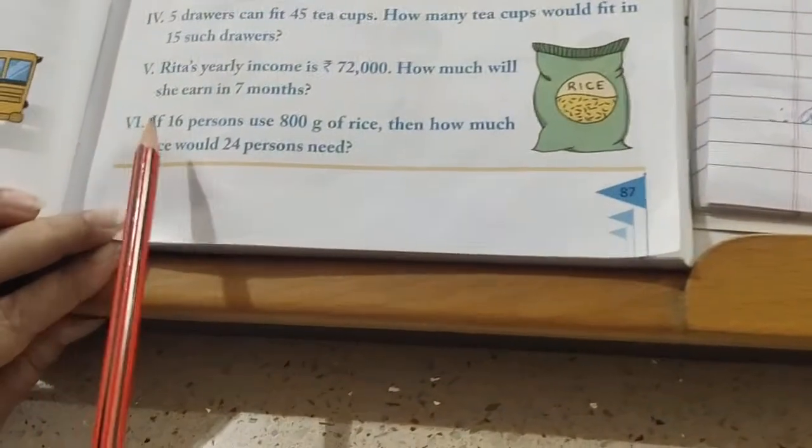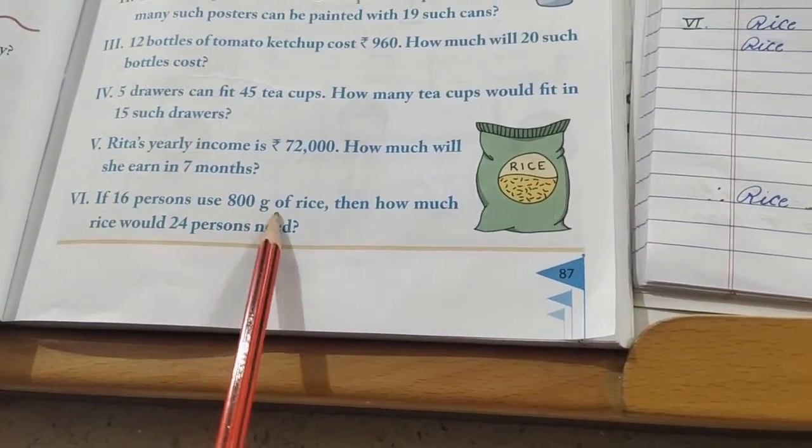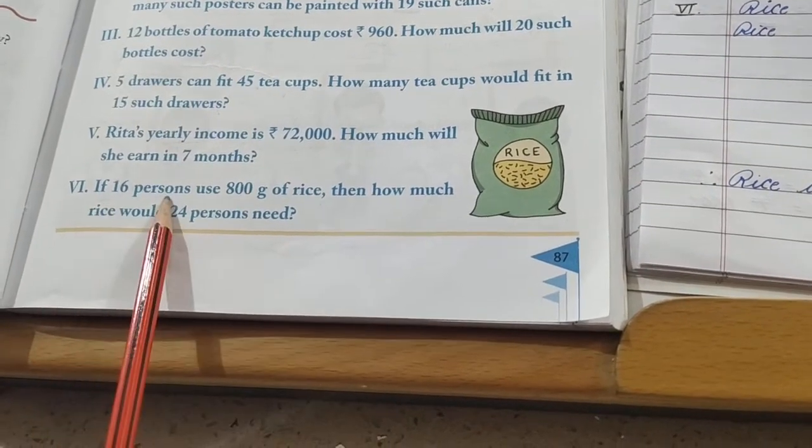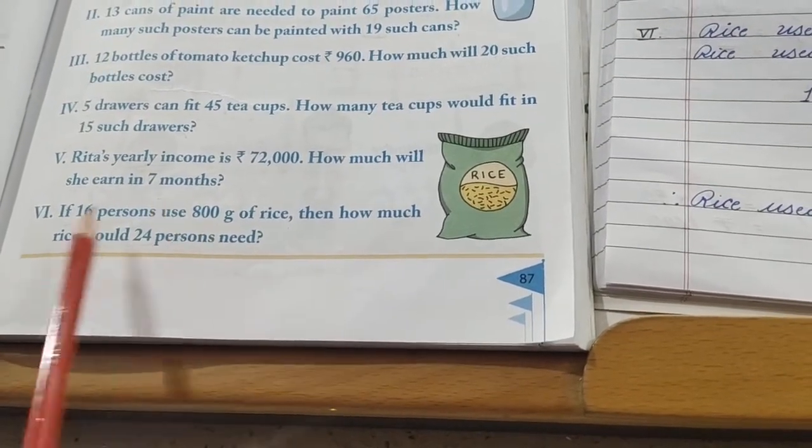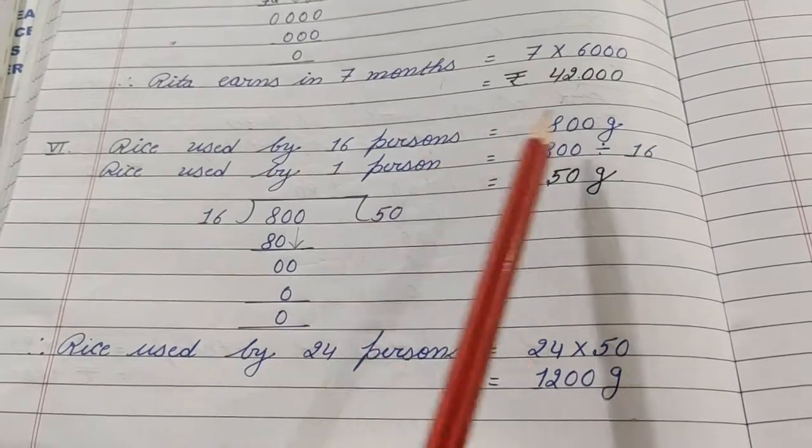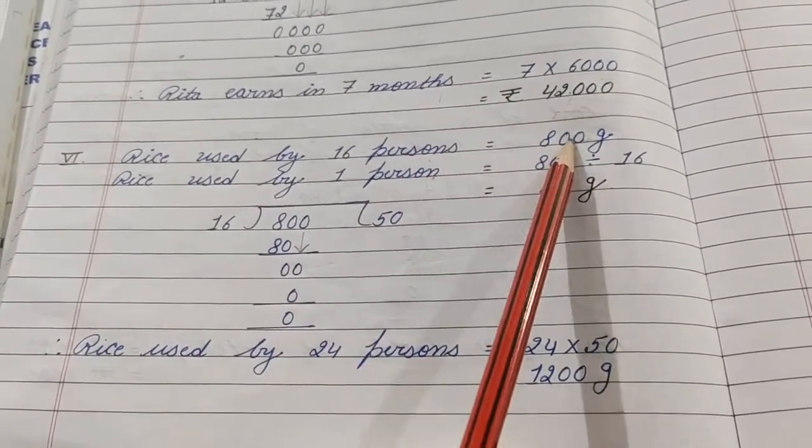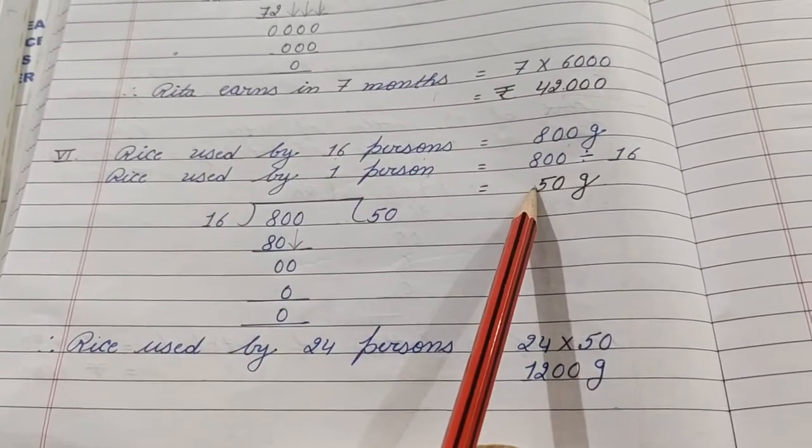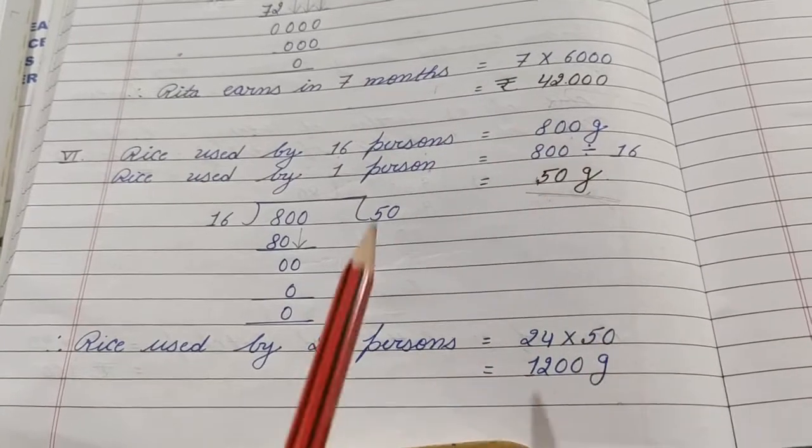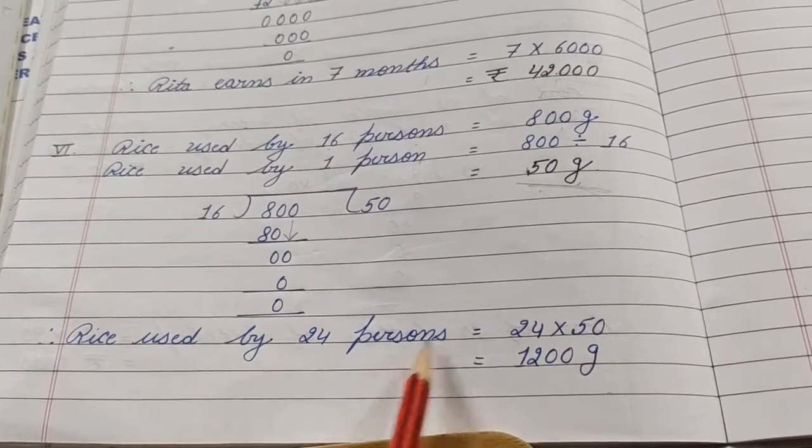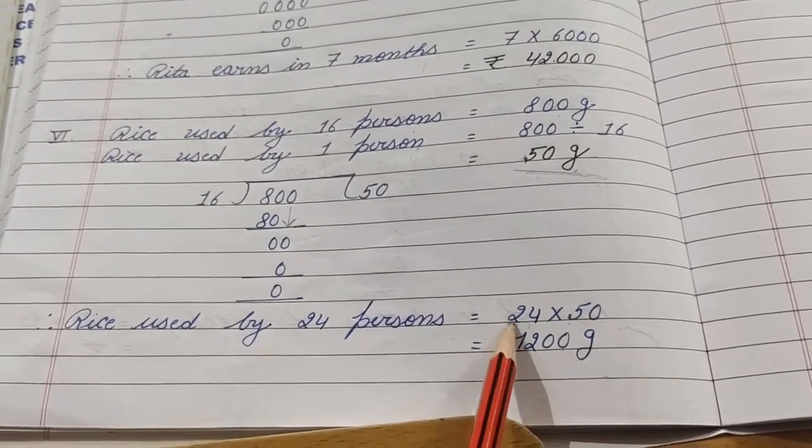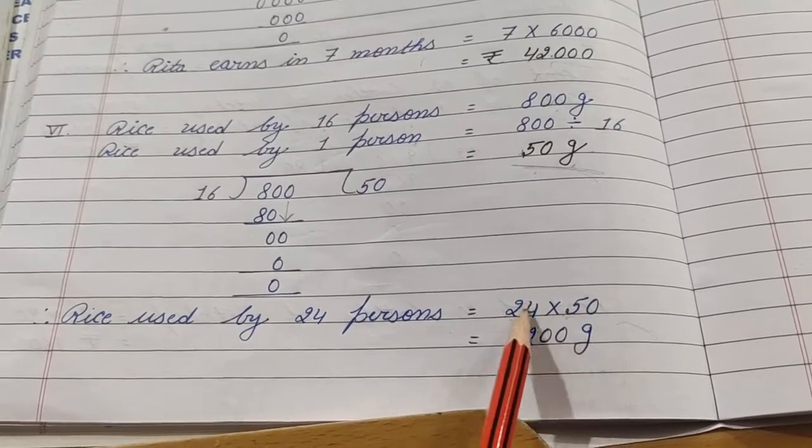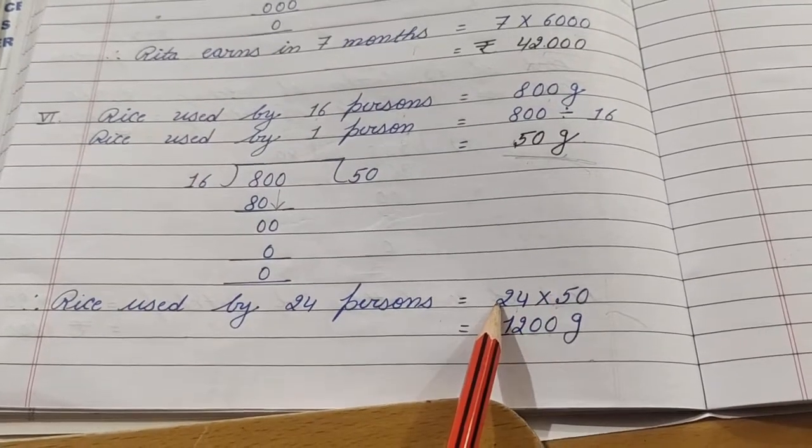See the next step: if 16 persons use 800 grams of rice, how much rice would 24 persons need? First from 16 where will we go? To 1, then from 1 to 24. Rice used by 16 persons, 800 grams. Rice used by 1 person, 800 divided by 16 equals 50 grams. We got 1 person's requirement, so we can find 24. Rice used by 24 persons equals 24 multiply 50. We'll use linear multiplication. First write the 0 here, then multiply 24 by 5 linearly: 5 fours are 20, write 0, carry 2 in the mind. 5 twos are 10 and 2 is 12. 1200 grams.